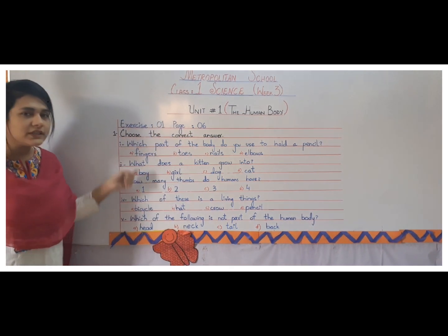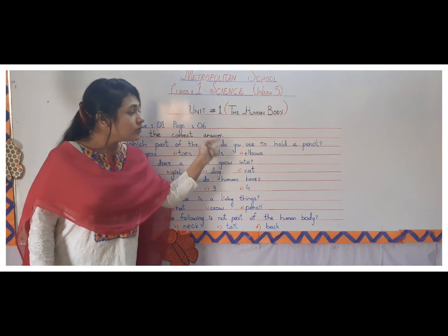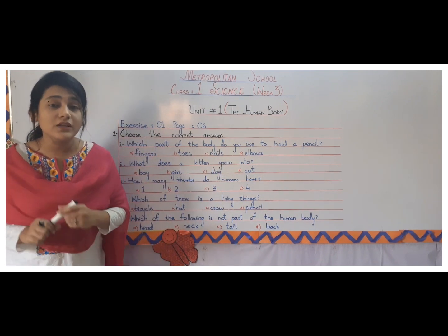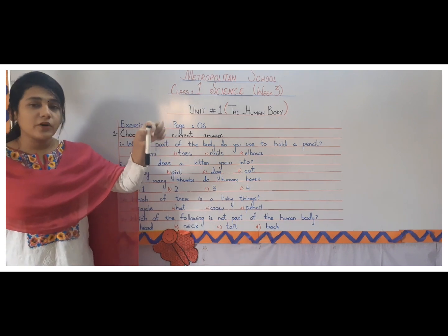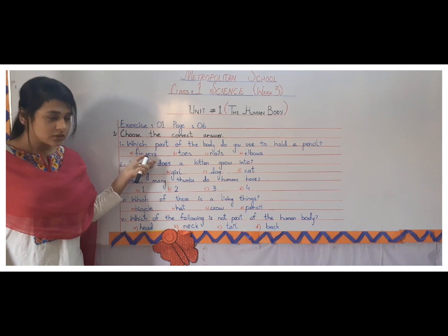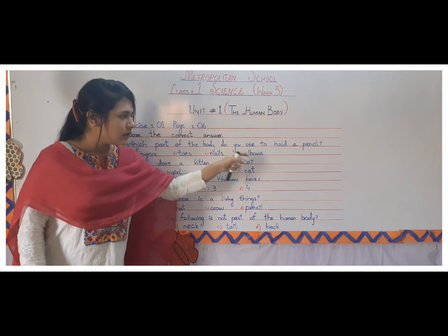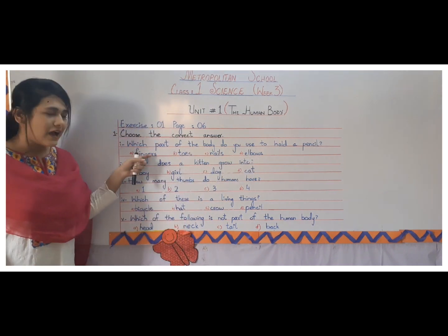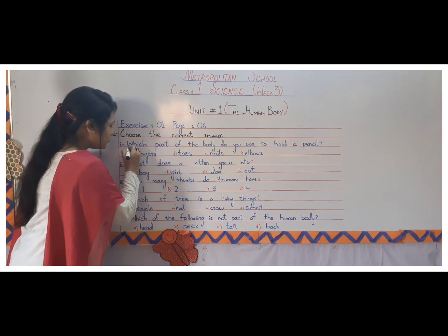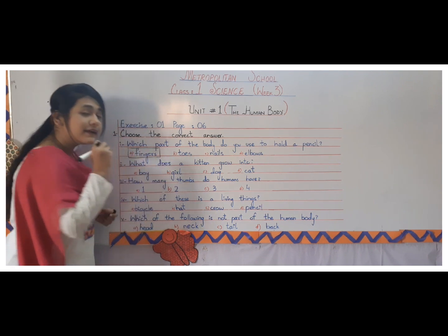You have to keep in mind what we recapitulated before, so that we can answer all these. Number 1 is: which part of the body do you use to hold a pencil? When you hold a pencil, which body part are you using? Am I using my fingers, or my toes, or my elbows? I am using my fingers to hold. So we all use fingers to hold things.